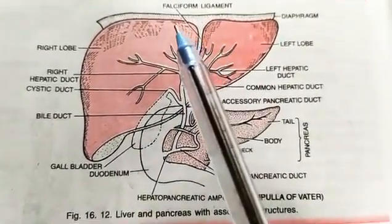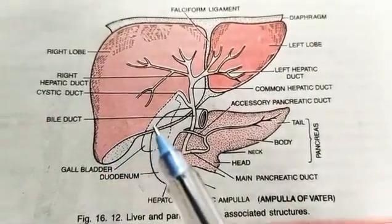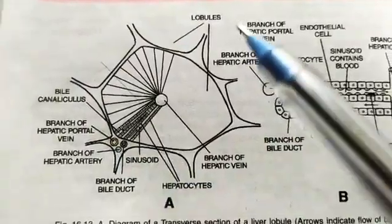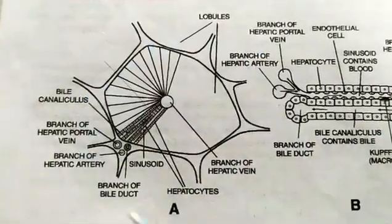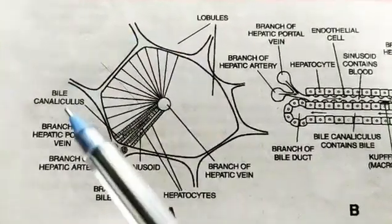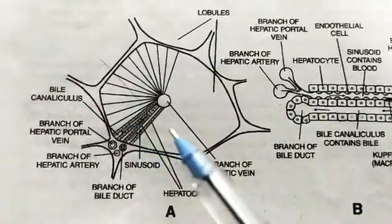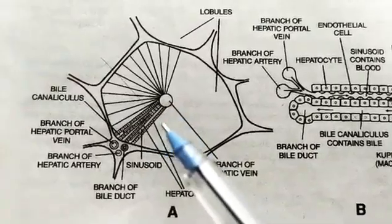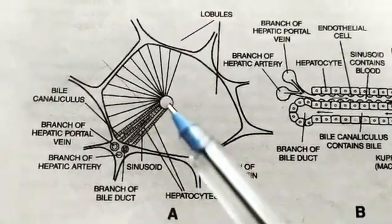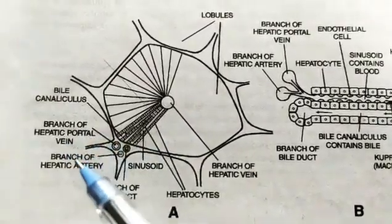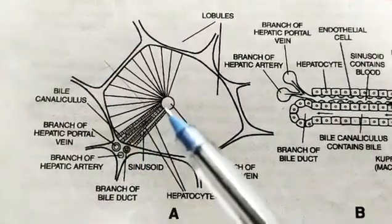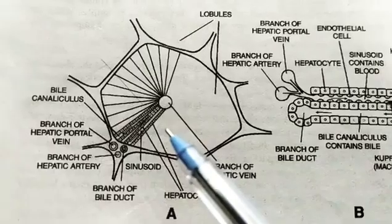Now we will see the internal structure of the liver. This is the internal lobule, known as the hepatic liver lobule. This lobule contains hepatocyte cells arranged in lines. Each lobule has a branch of hepatic vein at the center, and branches of the hepatic portal vein, hepatic artery, and bile duct at the sides.